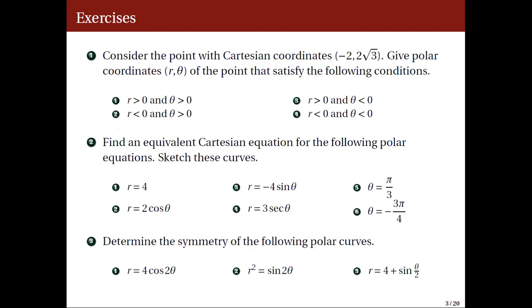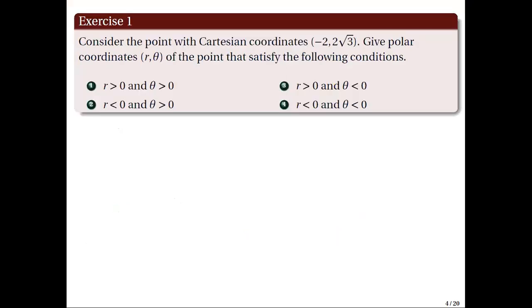For the first item, consider the point with Cartesian coordinates negative 2, 2 square root of 3. We give polar coordinates r, theta of the point that satisfy the following conditions. Number 1, r and theta are both positive. Number 2, r is negative while theta is positive. Number 3, r is positive while theta is negative. And number 4, both r and theta are negative.